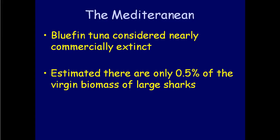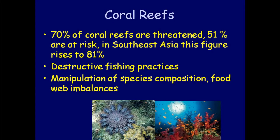Looking at a case history in the Mediterranean: bluefin tuna are considered nearly commercially extinct. Large sharks in the Mediterranean are at only about 0.5% of their virgin biomass — meaning for every 200 large sharks there were in 1950, we now have one. And this is from 2008, so it's probably worse now. This obviously has a lot of ecological flow-on effects.